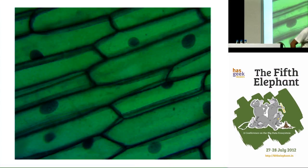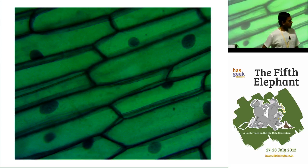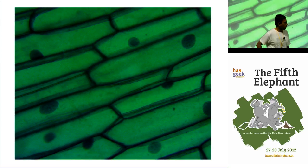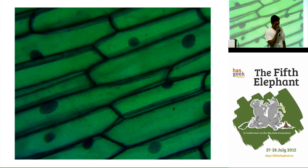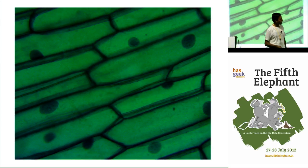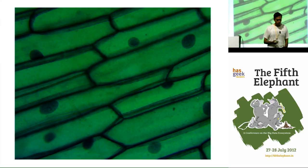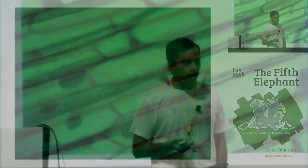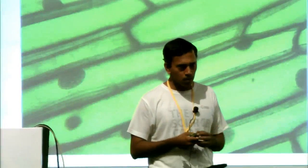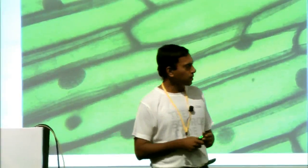Starting with this picture — a collection of cells that all of us are made up of. For this audience, think of cells as processors: each cell is a processor that does some computation. This is a truly distributed system in the sense that every cell is running its own process.